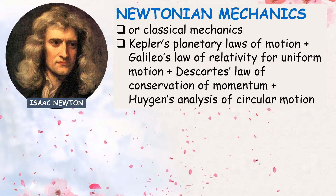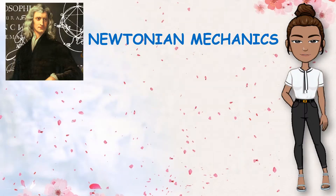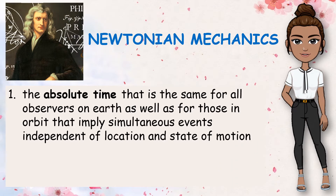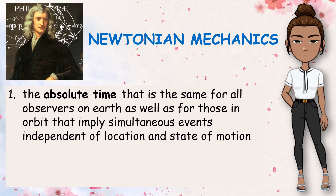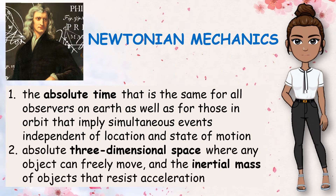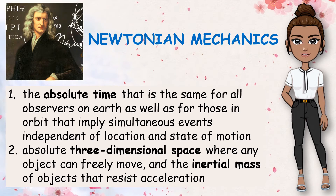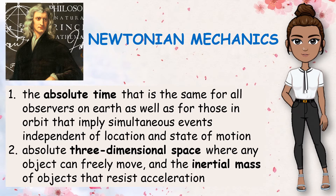The mechanics explains that space or distance, time, and mass are absolute. This means that the distance between two objects and the time that passes between two events does not depend on the environment where the object is in. In this theory, the motion of both heavenly and terrestrial objects is built on one force law and three independent basic concepts: absolute time, that is the same for all observers on Earth as well as for those in orbit, implying simultaneous events independent of location and state of motion; absolute three-dimensional space, where any object can freely move; and the inertial mass of objects that resist acceleration. All inertial frames, physical laws, and universal constants that arise in it are the same.